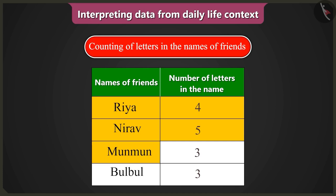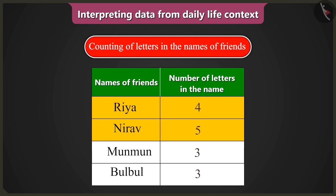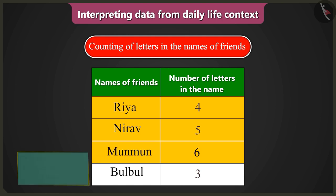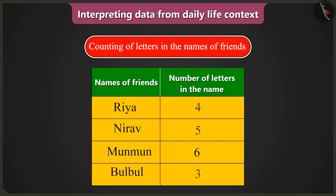You counted M-U-N in Munmun, so you wrote three letters, but these three letters come two times, so that is a total of six letters. I have to count all the letters that come in the name Munmun, no matter how many times they come, so here the number of letters will be six. Now tell me, how many letters are there in the name Bulbul? There are a total of six letters, not three.